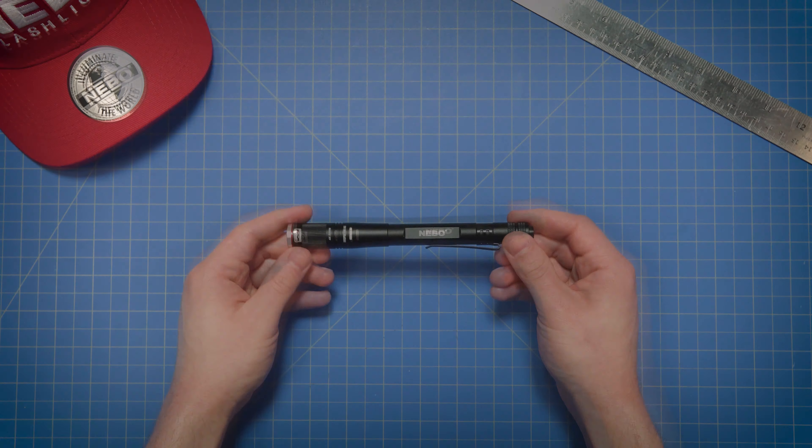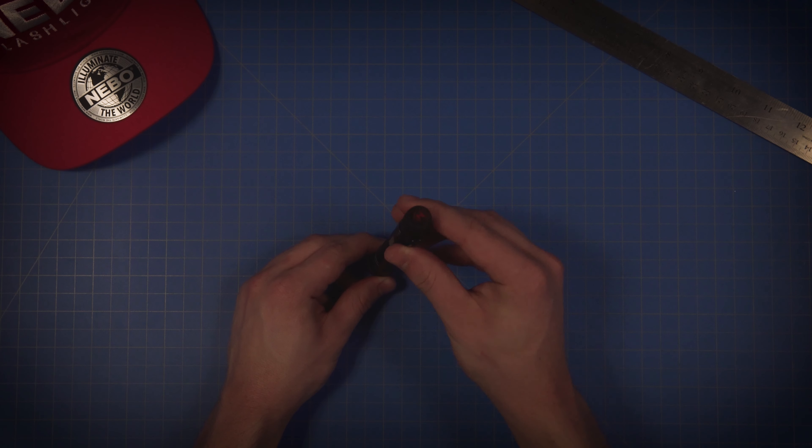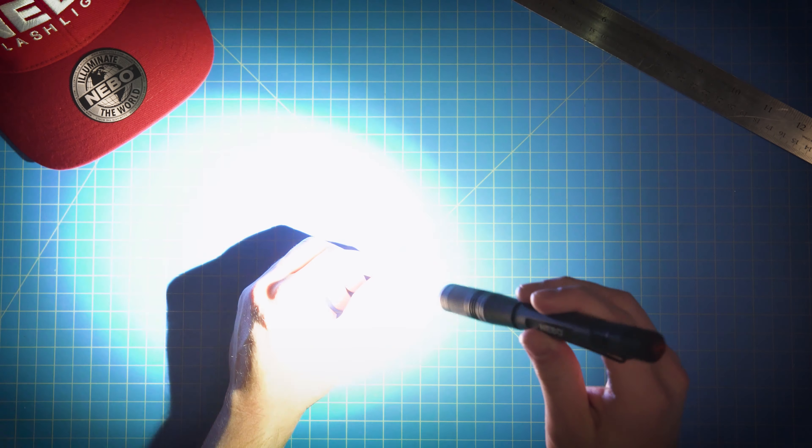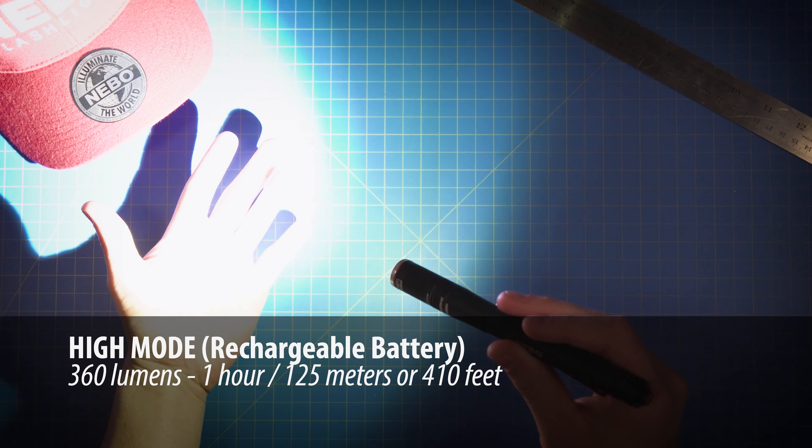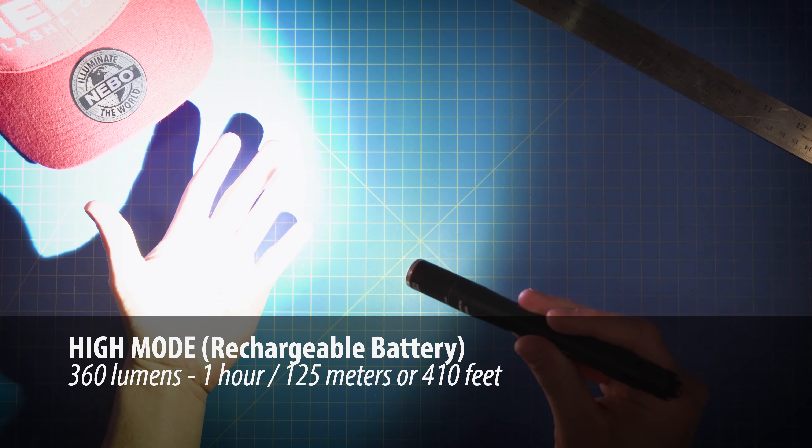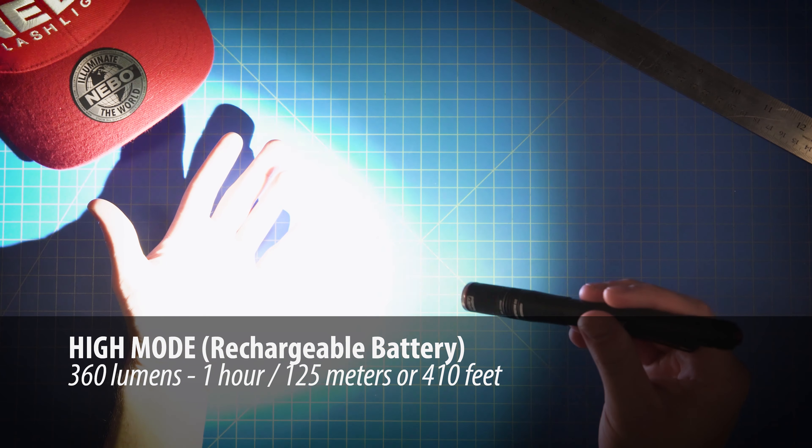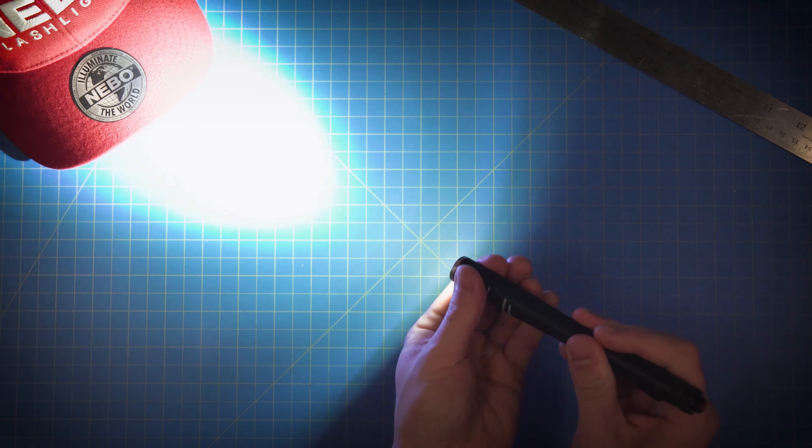Okay, so let's go ahead and check out the Inspector RC's three light modes. To turn the light on, simply press the button on the back all the way down until you hear a click. The light will turn on first in high mode, which is up to 360 lumens, shining at a distance of up to 125 meters, or 410 feet, for one hour. And here is what it looks like when you zoom the light in.